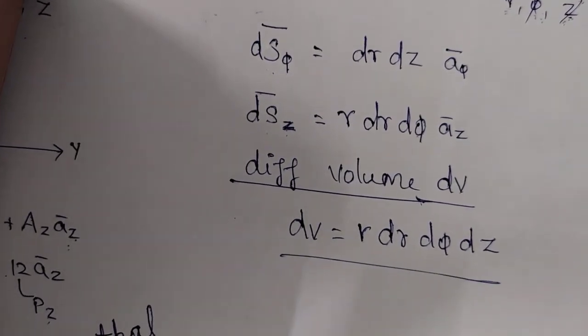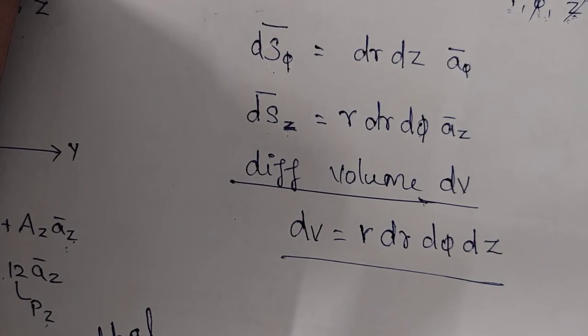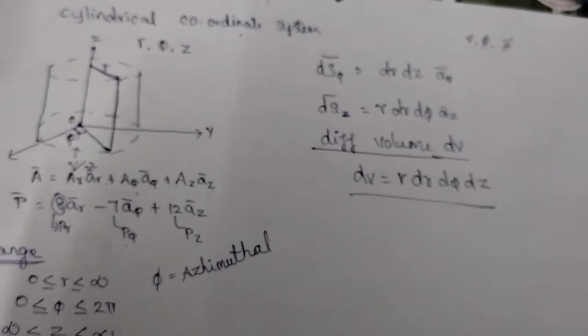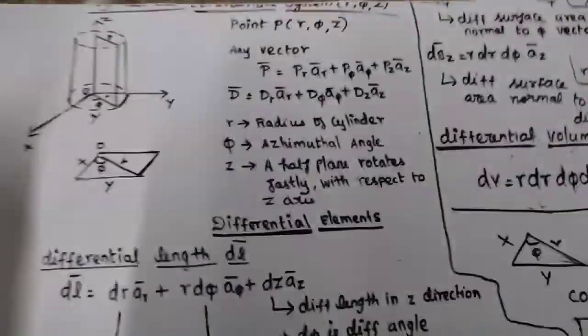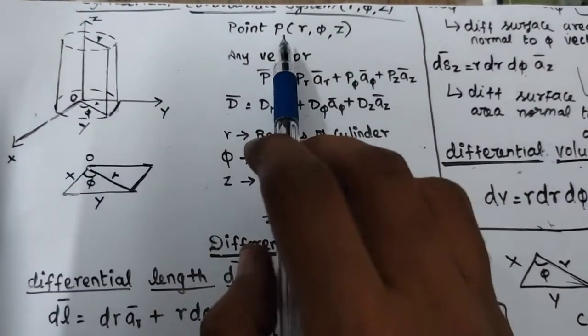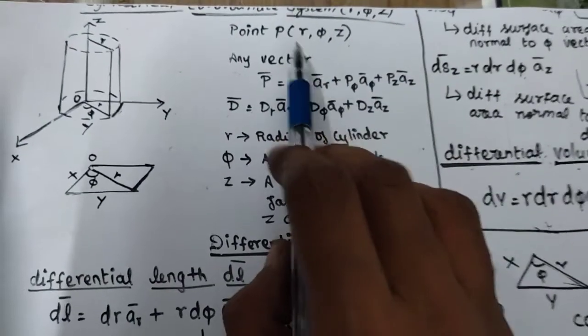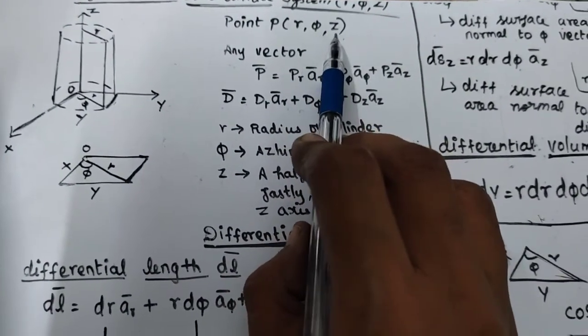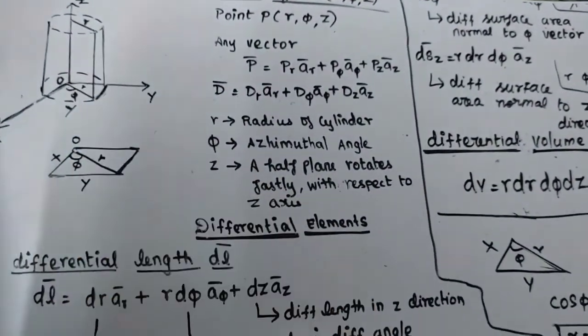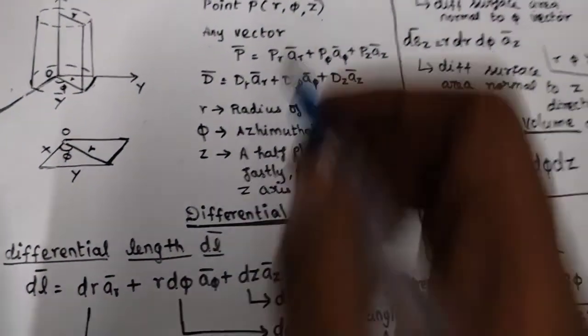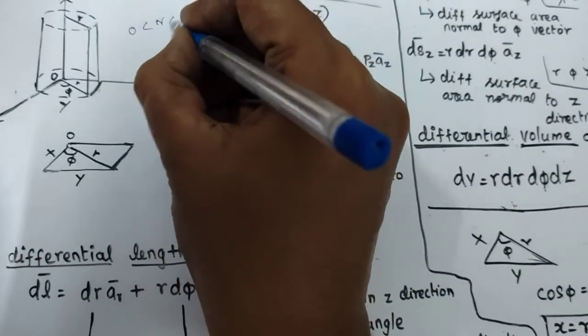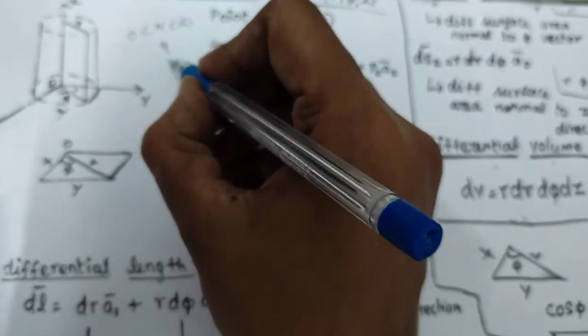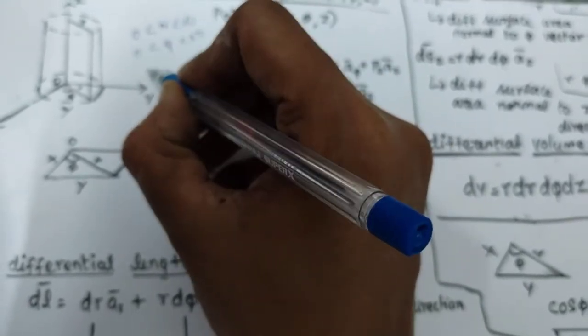That covers cylindrical coordinate system and its differential elements. Let me give a small recap. In cylindrical coordinate system the variables are r, phi, and z. r is the radius of the cylinder, phi is the azimuthal angle, and z is the axis of the cylinder. The ranges are: r varies from 0 to infinity, phi varies from 0 to 2π, and z varies from minus infinity to plus infinity.